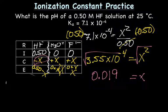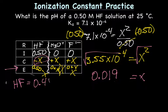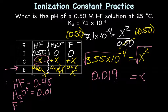Okay, so now we can figure out the equilibrium concentrations for HF, H3O+, and F- by substituting in the X in the equilibrium area. So for HF, we end up with 0.5 minus 0.019, giving us 0.48. For H3O+ and actually for F- as well, we're going to end up with an equilibrium concentration of 0.019.